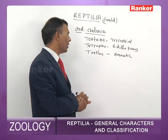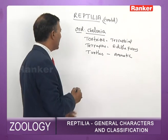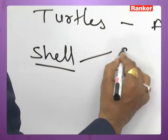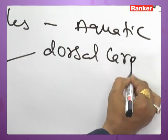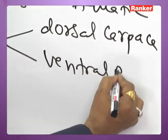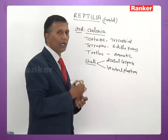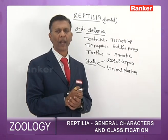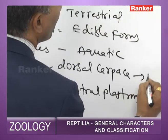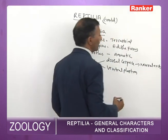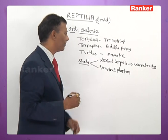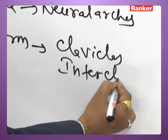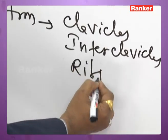In Chelonians, the body is divisible into head, trunk, and tail, and the entire trunk is enclosed in a shell with a dorsal carapace and a ventral plastron. The carapace is formed by fusion of neural arches of vertebrae.